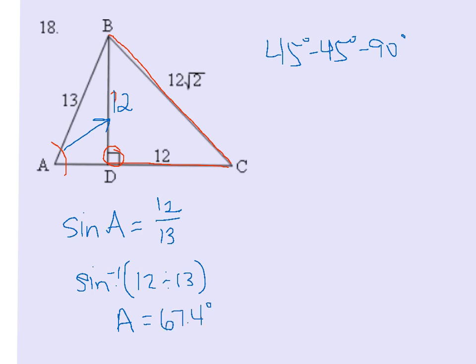So number 18 is kind of a two-part problem. You first have to figure out BD using this triangle, and then to find angle A, you're going to use this triangle ABD.